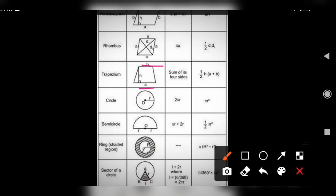Next one, circle: perimeter is 2πR and area is πR². Perimeter of semicircle is πR plus 2R. Area is half into πR².